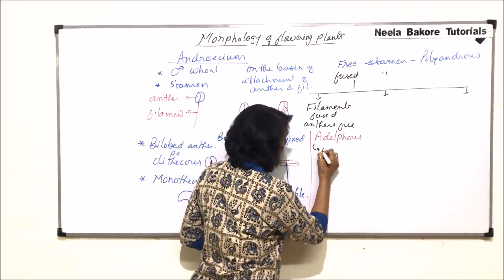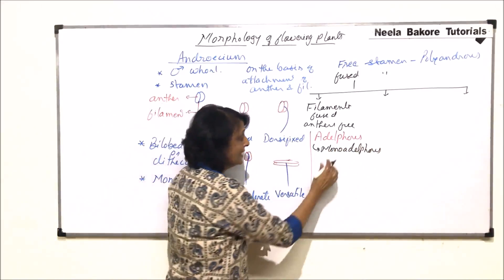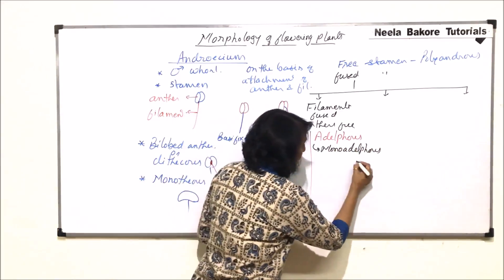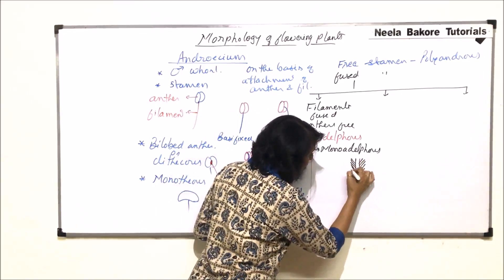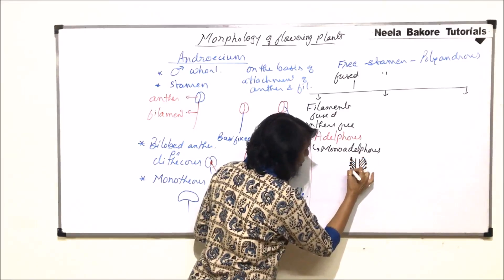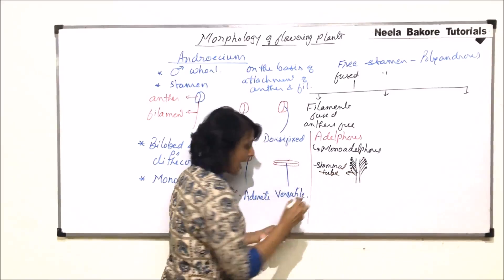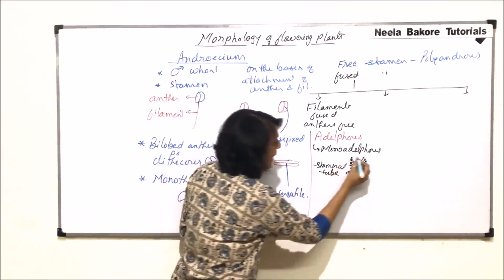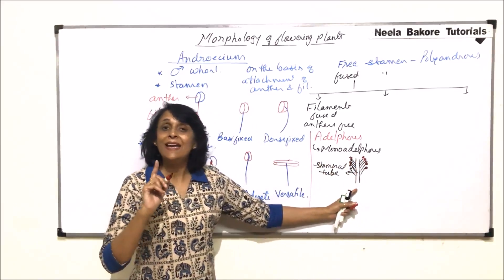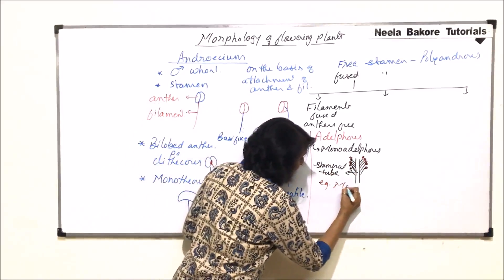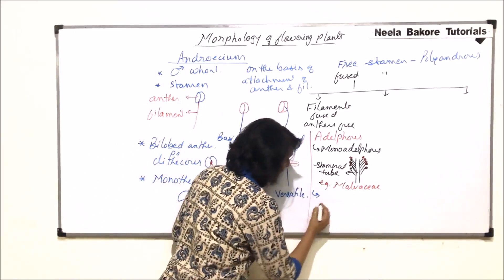In the adelphous condition, filaments are fused but anthers are free. Depending upon how many bundles are formed, we classify it further. Monadelphous means all the filaments have fused to form only one bundle. This is seen in the Malvaceae family. If you recall the structure of China rose, there is a staminal tube with many small structures at the tip bearing yellow anthers. This tube is formed by fusion of the filaments, while the anthers remain free — forming only one bundle.